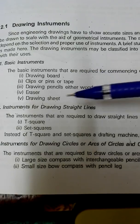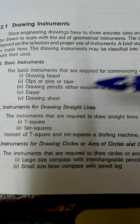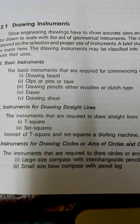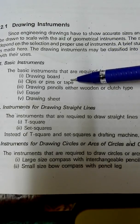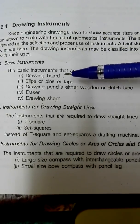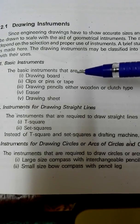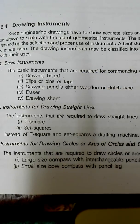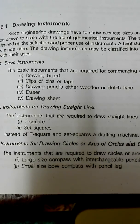We particularly need to understand what drawing sheets are used, because in different fields, different sizes of sheets are used — like A4, A3, and A2 size sheets. Clips and pins are used to hold the drawing sheets, and a drawing board is a board on which we place the sheet. Pencils also come in different types, and different types of lines indicate different things.